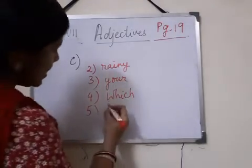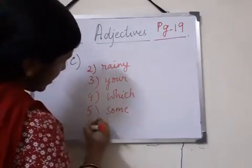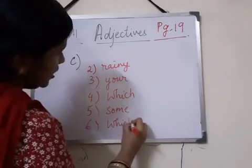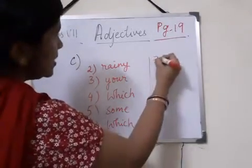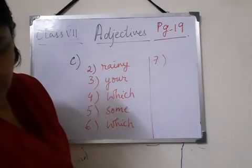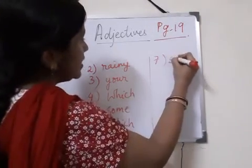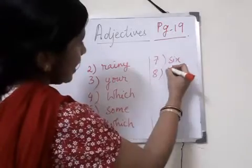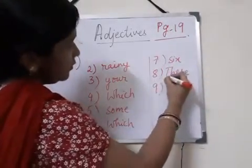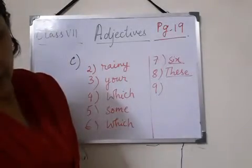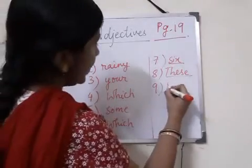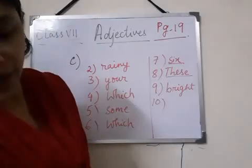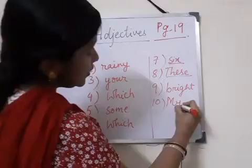Number 5: Underline 'some' — adjective of quantity. Number 6: Which book have you bought? — 'which,' interrogative adjective. Number 7: There are 6 apples in the basket — '6,' adjective of number. Number 8: These students participated in the exhibition — 'these,' demonstrative adjective. Number 9: The color of the wall is bright — 'bright,' adjective of quality. Number 10: My song has not been recorded yet — 'my,' possessive adjective.